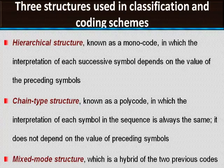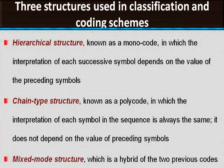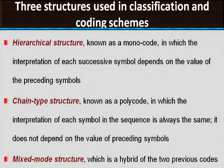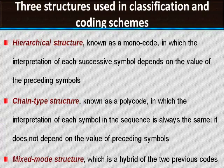The second type is the chain type coding structure, also known as polycode, in which the interpretation of each symbol in the sequence is always the same — it does not depend on the value of preceding symbols. For example, in the code 1, 2, 3: 3 has a particular meaning, 2 has some meaning, and 1 has some meaning, each independent of the other. Very little information can be incorporated in this code, but it is very easy to understand.